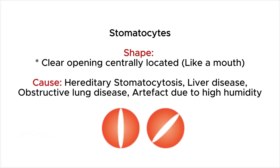Stomatocytes are erythrocytes with a clear opening located centrally in the cell with the shape of a mouth. This condition is seen in hereditary stomatocytosis, liver disease, and obstructive lung disease. It can also be an artifact due to high humidity which makes the smear dry slowly.